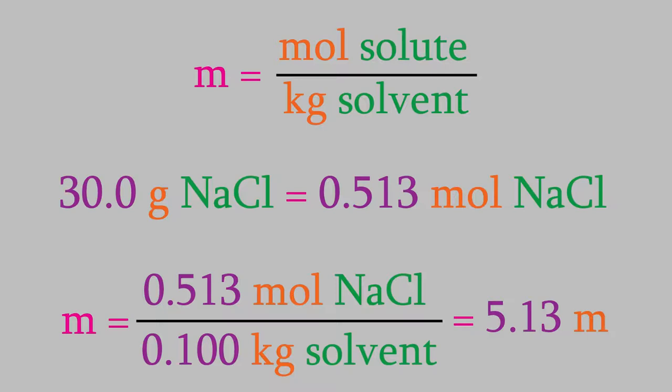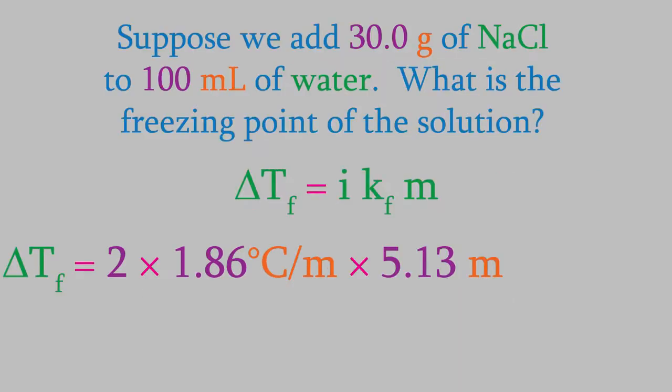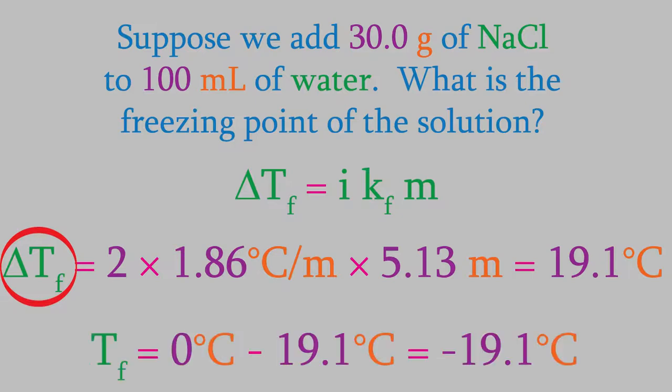We put that molality in the equation for our freezing point depression. That gives us a result of 19.1 degrees Celsius. But be careful, that is not the answer to our question. The question asked, what's the freezing point? But what we just calculated is the change in the freezing point. So, the freezing point is 19.1 degrees lower than it would be without any solute. Pure water has a freezing point of 0 Celsius. So with this amount of salt, the new freezing point will be 19.1 degrees lower, which is negative 19.1.